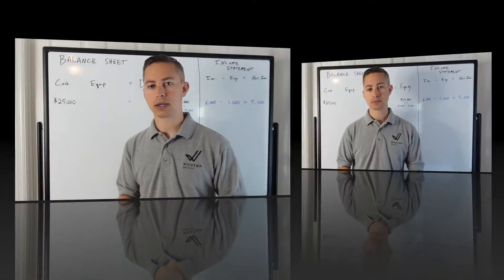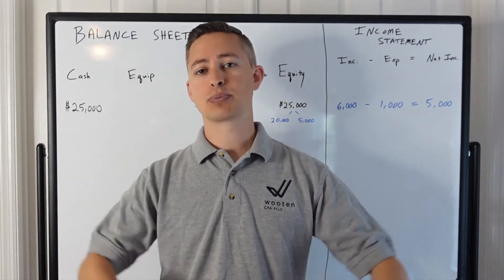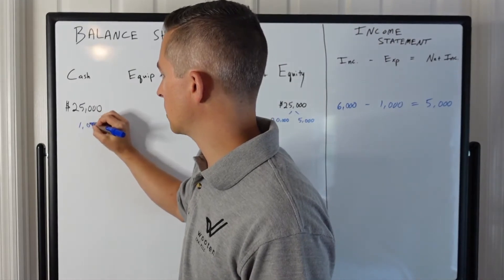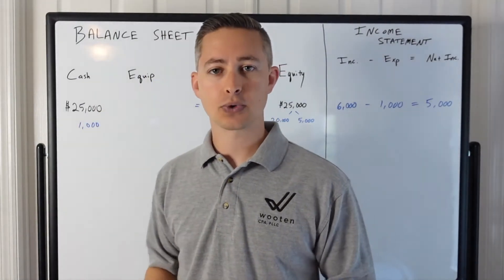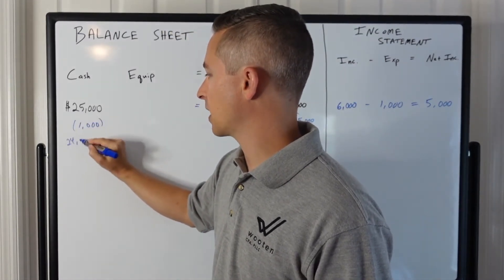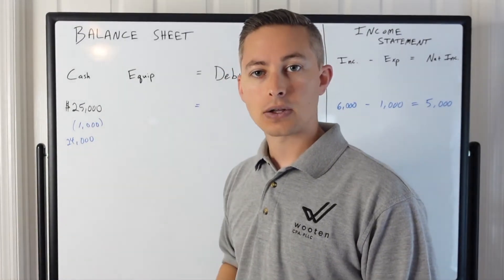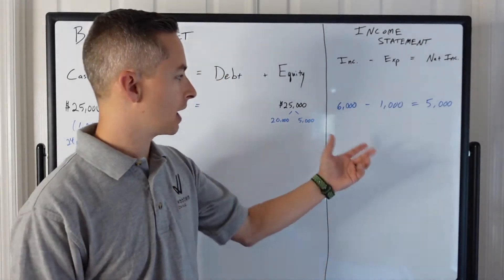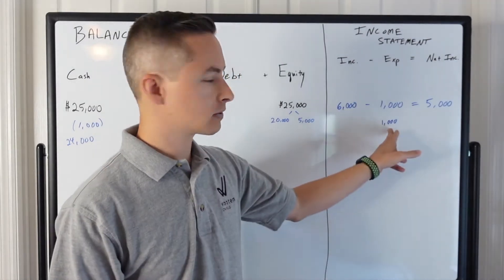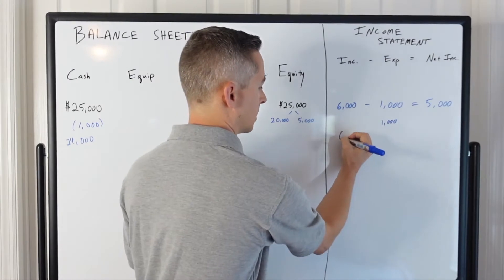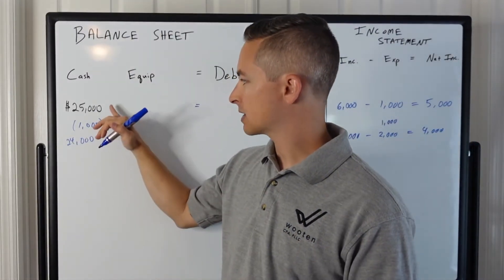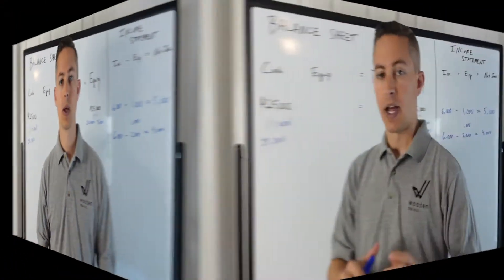The basic concept of depreciation is taking an expense and spreading it out over time instead of expensing it all in the year you spent the money. With a normal business expense — say $1,000 for office supplies that are consumables you'll use up within the current year — you subtract $1,000 from cash and put $1,000 of expense on your income statement. Those offset each other as a balanced transaction, so income becomes $4,000 and cash goes from $25,000 to $24,000.